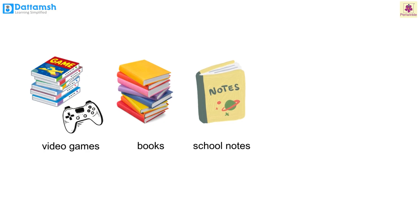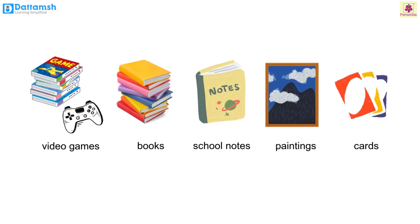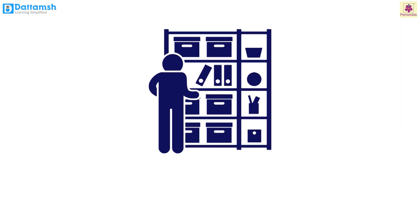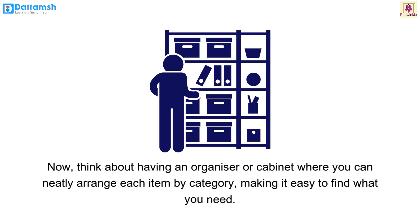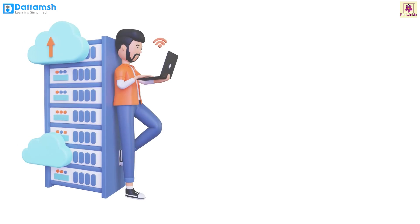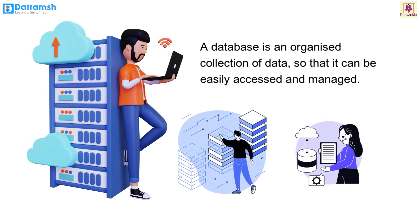Imagine you have a huge collection of things like video games, books, school notes, paintings, cards, etc. If you just pile them all together, it would be difficult to find what you are looking for. Now think of having an organizer or cabinet where you can neatly arrange each item by category, making it easy to find what you need. That's exactly what a database does for digital information.